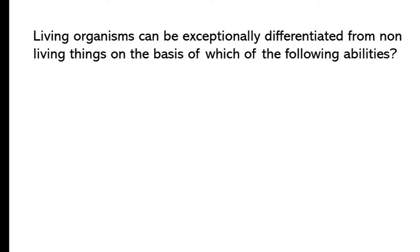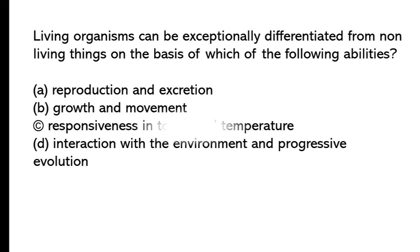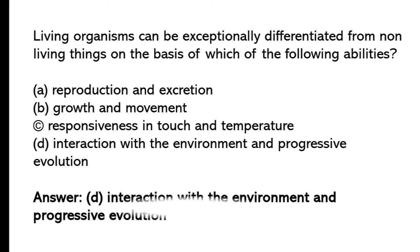Living organisms can be exceptionally differentiated from non-living things on the basis of which of the following abilities? Reproduction and excretion, growth and movement, responsiveness to touch and temperature, interaction with the environment and progressive evolution. So the correct answer is option D, interaction with the environment and progressive evolution.